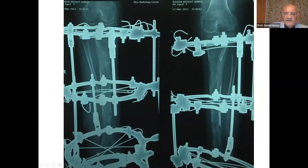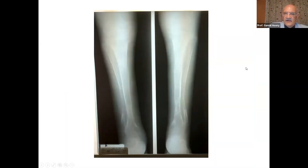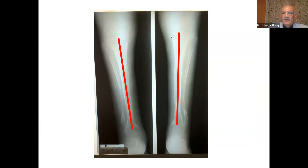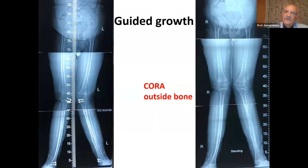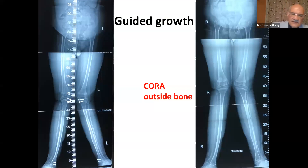This is after lengthening and correction of the deformity. You can also use guided growth to correct the deformity — in such a case with two CORAs, we apply guided growth in the upper tibia and guided growth in the lower tibia.